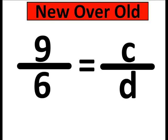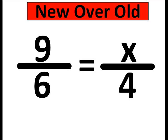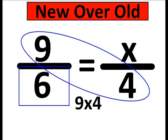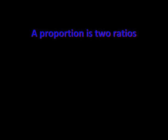I'll put new over old — there's the 9 over the 6. And on the other side I'll put the 4 under the x. When I cross multiply, I will have 9 times 4, and then I will divide by 6, and finally I'll solve.